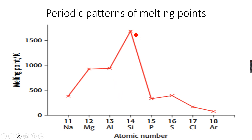Silicon has a giant covalent structure — a three-dimensional structure of continuous covalent bonding. So it has a very high melting point because a lot of heat energy is needed to break so many covalent bonds.